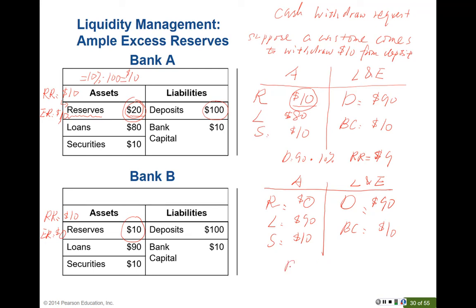Can Bank B meet the Federal Reserve requirement? The required reserve should be $90 times 10%, which is $9. But Bank B's new balance sheet shows zero dollars in reserve — less than the $9 minimum. As a result, Bank B may fail. This illustrates liquidity management: Bank A survives after the withdrawal, but Bank B does not have enough reserve and will fail.